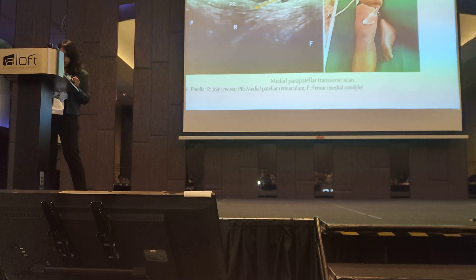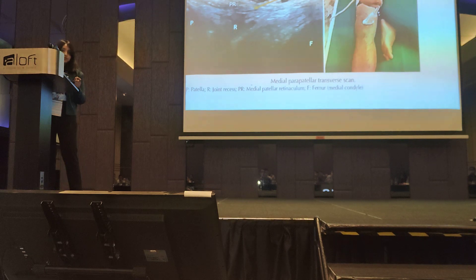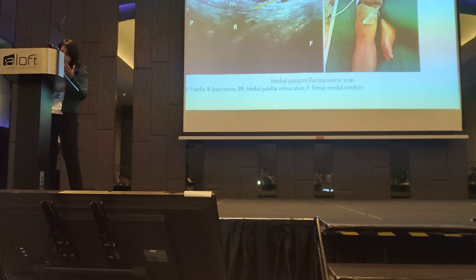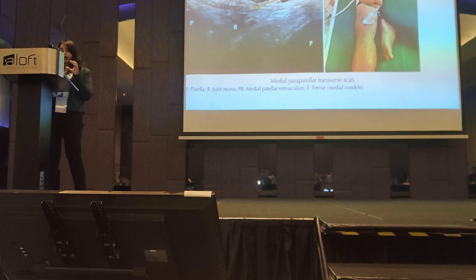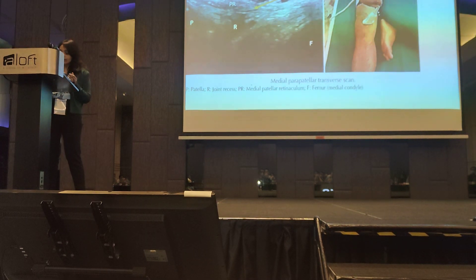Here we see the medial parapatellar transverse scan. We hold the linear probe in this direction and the yellow arrow shows the needle trajectory. We see two bony surfaces — the patella and the femur — and in between, our needle crosses through the medial patellar retinaculum, reaching the joint recess where we give our PRP and hyaluronic acid.